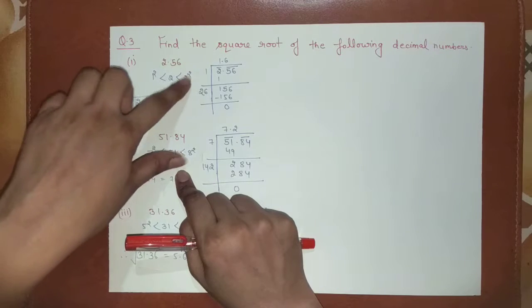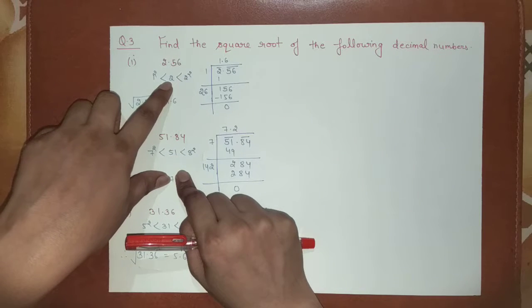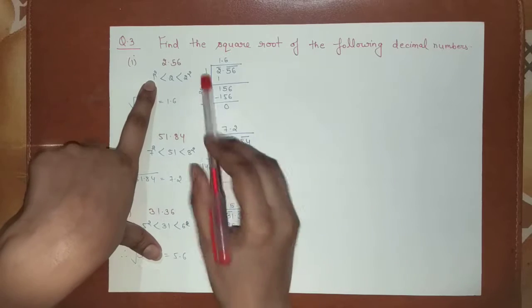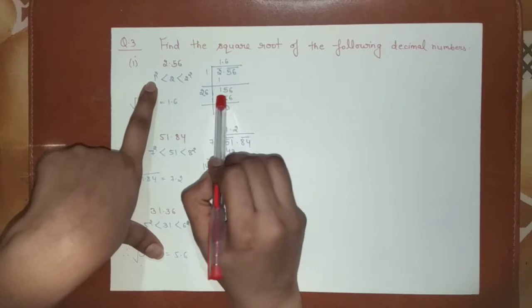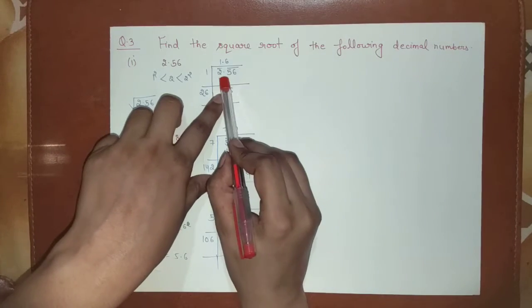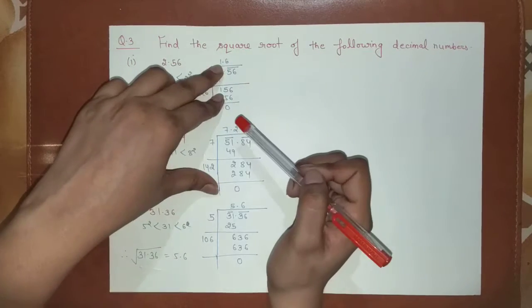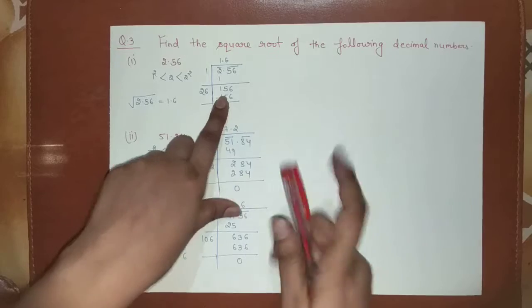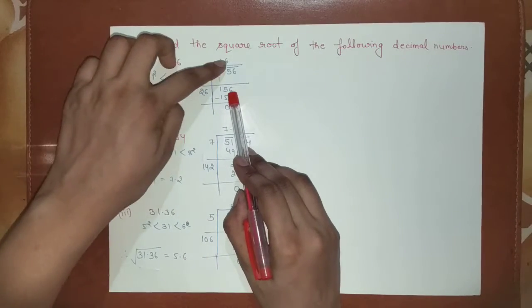1 squared is 1, 2 squared is 4. 4 is greater than 2. We will add 1 here. 1 times 1 is 1. This remains 1. What is the point in the center, we will put it on the quotient. Now we have here 1.56, 1 and 1.